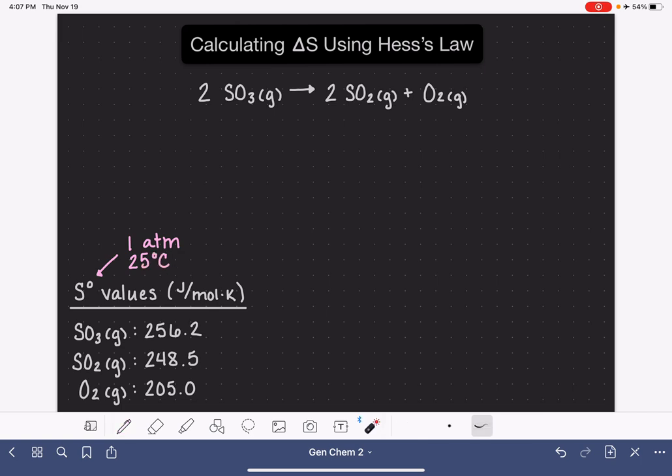To calculate delta S using Hess's Law, we're just going to be using our standard Hess's Law procedure. My mantra for Hess's Law is that we always take the products and we subtract from them the reactants. Products minus reactants.